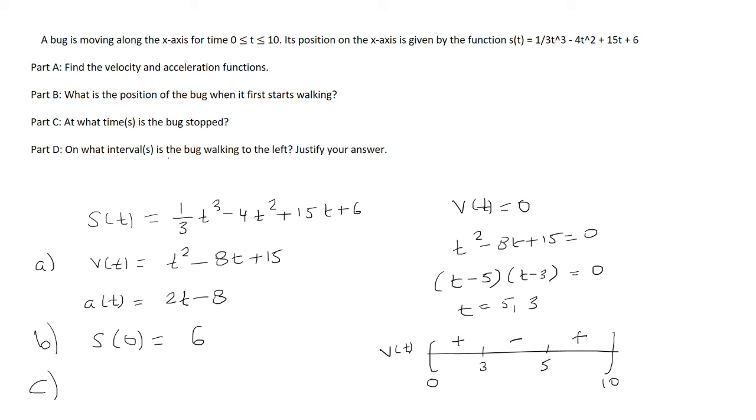Part C, at what time is the bug stopped? So that's when the derivative is 0, which we found here, which in other words, the velocity is 0. So that was at time 3 and 5.